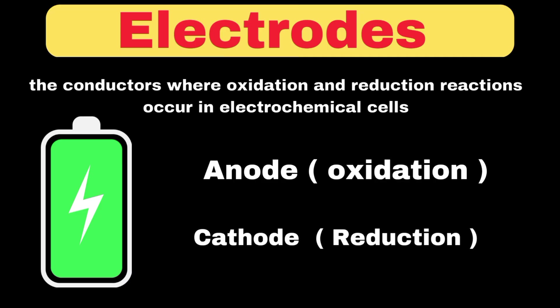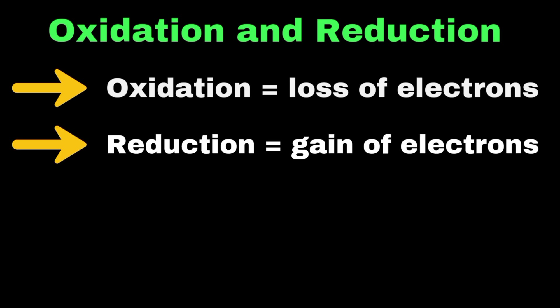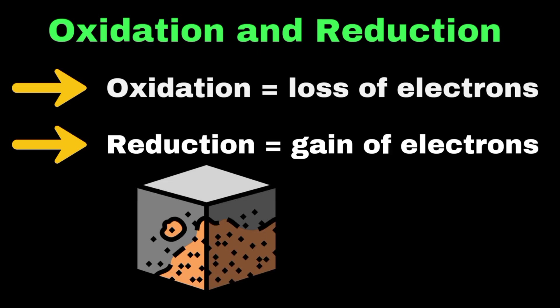Now let's explain oxidation and reduction. Oxidation can be defined as the loss of electrons, while reduction is the gain of electrons. Let's take the example of iron rusting. When iron rusts, it loses electrons to oxygen, while oxygen gains these electrons. This process, called redox, is the basis of many electrochemical reactions.